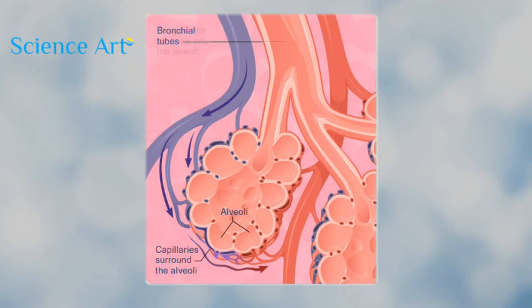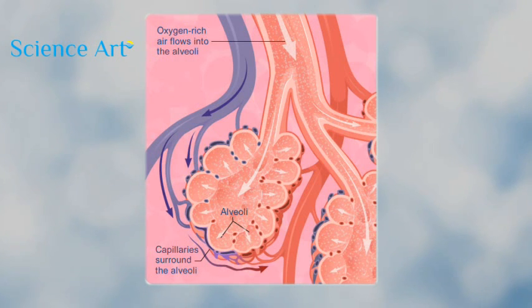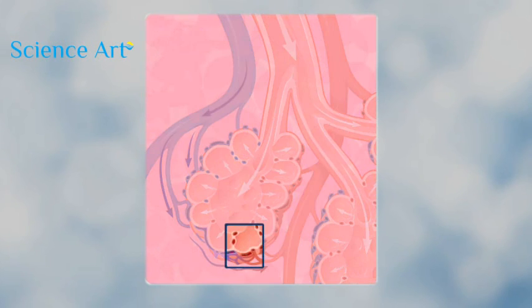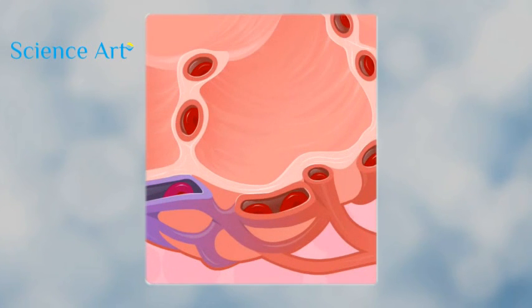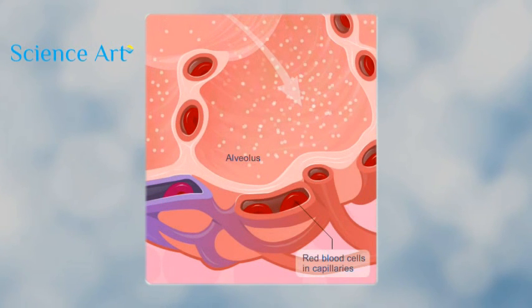When you inhale, air flows down the bronchial tubes and into the alveoli. This inhaled air is oxygen rich. Gas exchange occurs between the air in the alveoli and the red blood cells located in the blood in the capillaries.